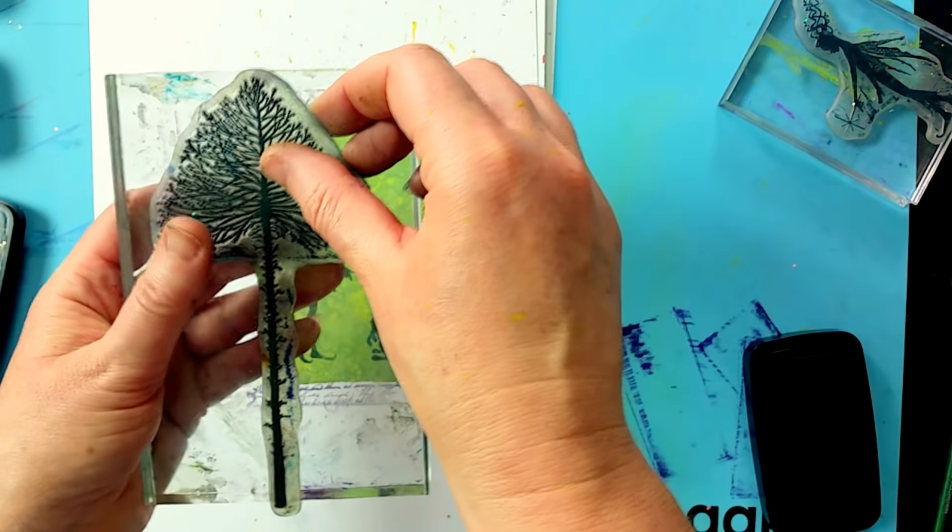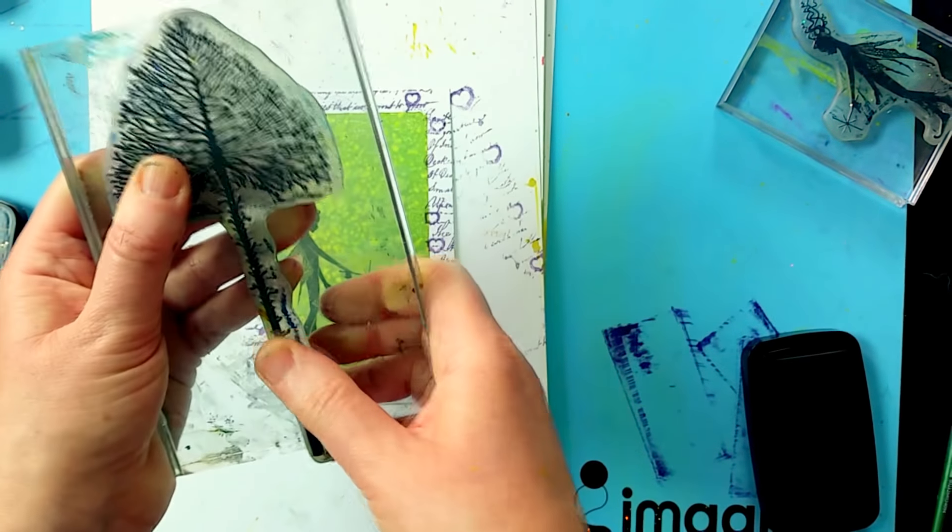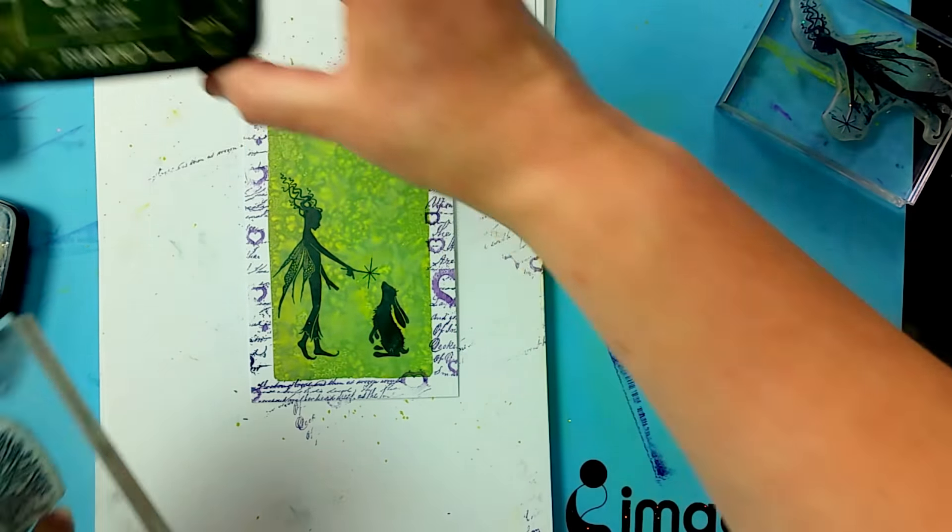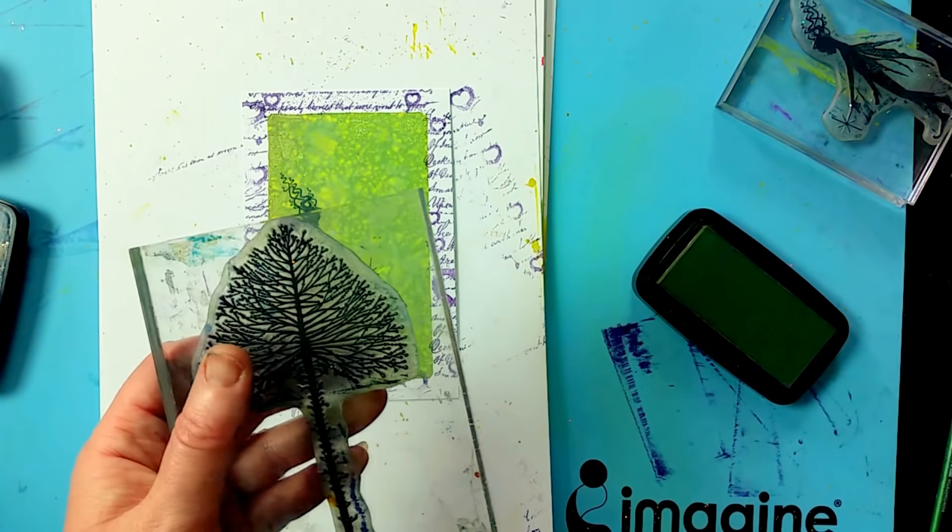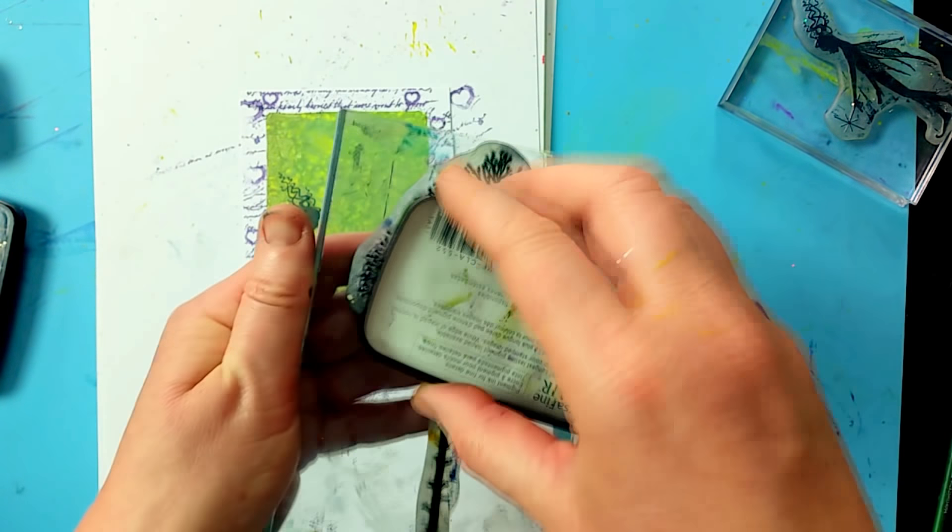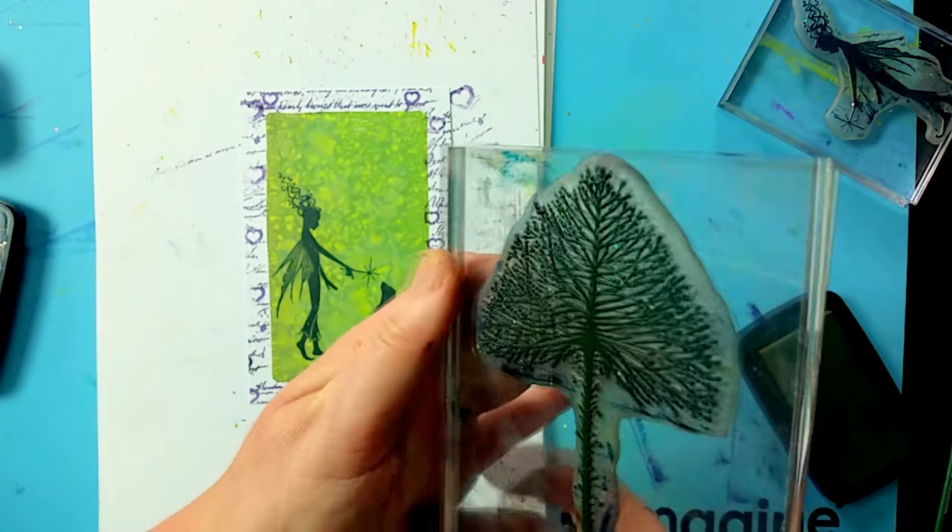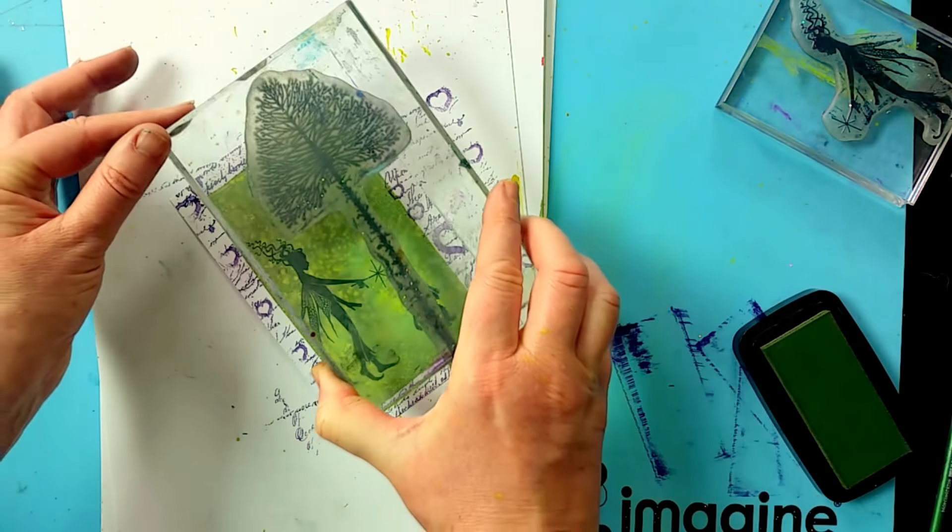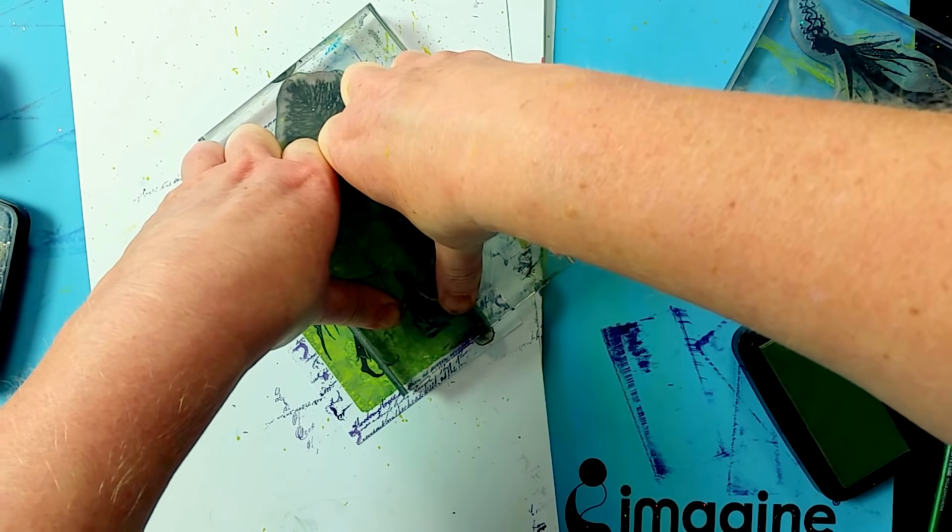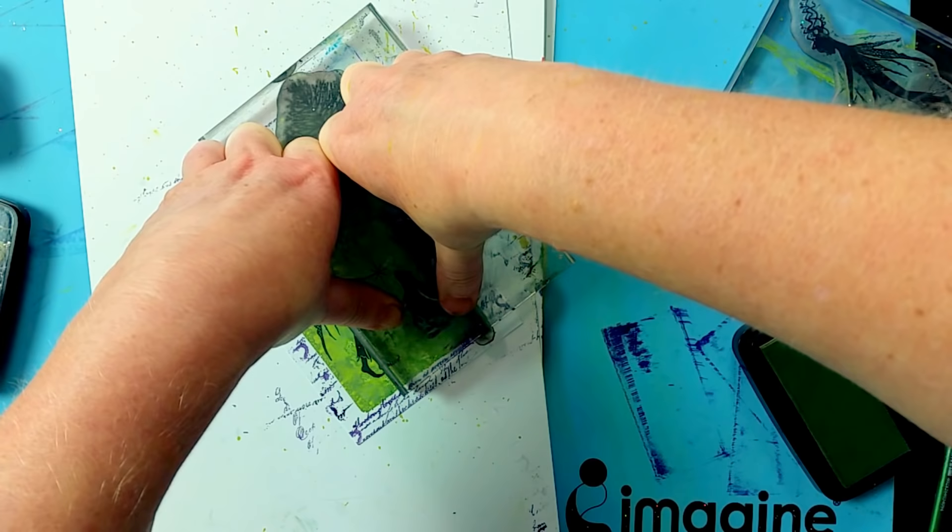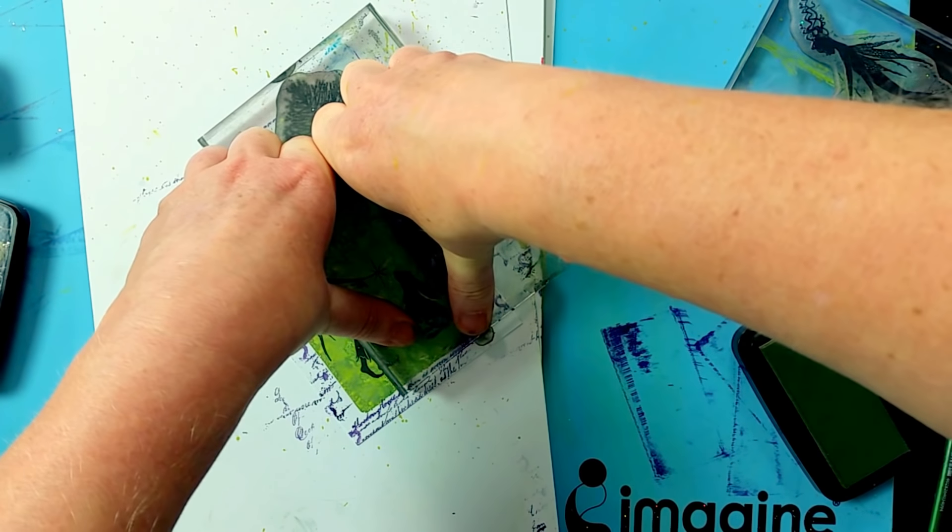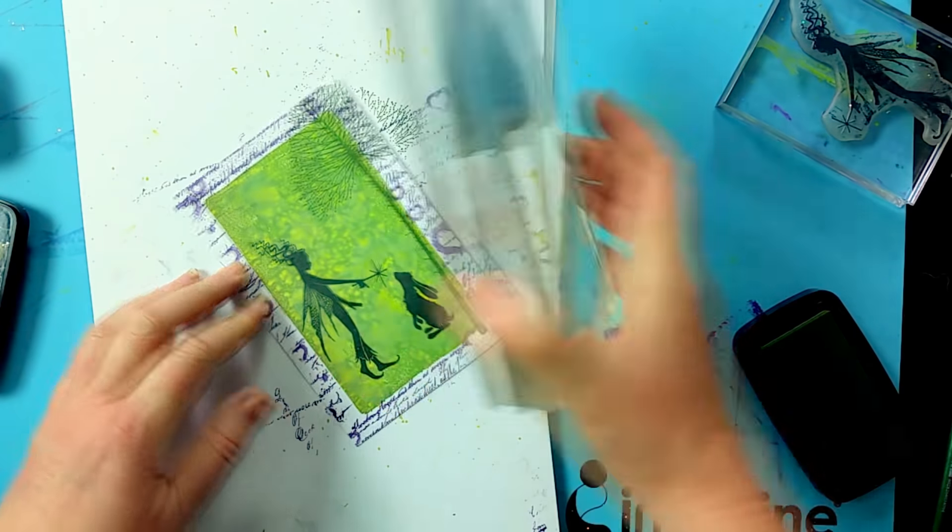So I'm using the celestial tree, the large one now. And this time I'm going to ink up in Shady Lane. And just pop that down on the edge there.